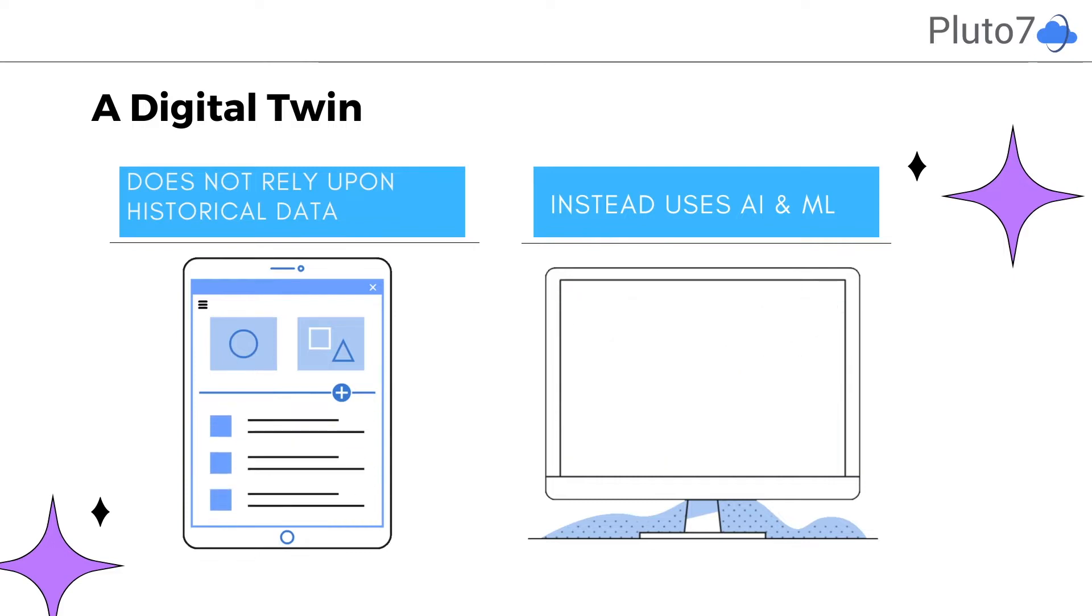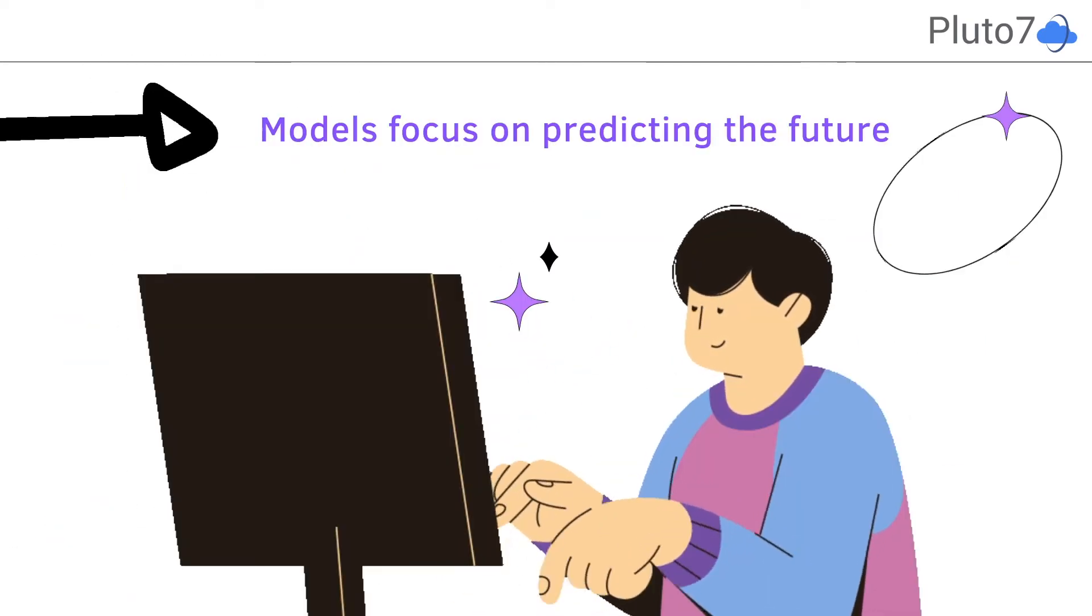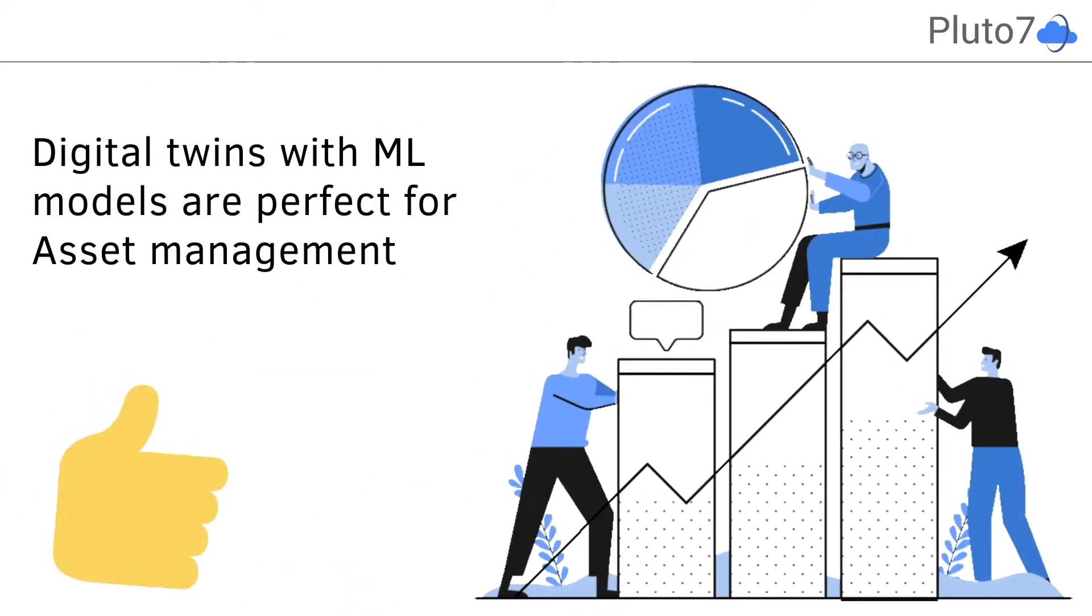Instead of relying on historical data, a digital twin uses AI to analyze a model in real time. Therefore, these models focus on predicting the future rather than analyzing the past.